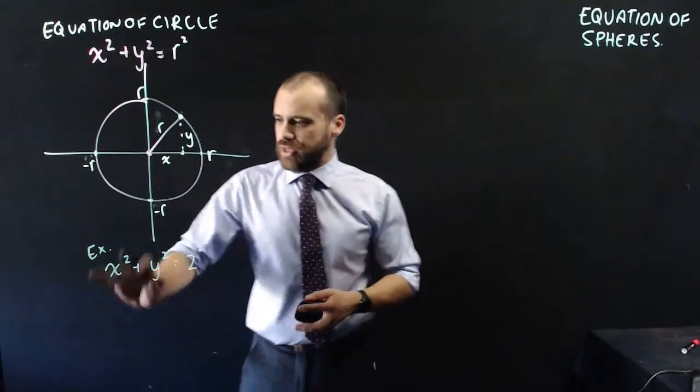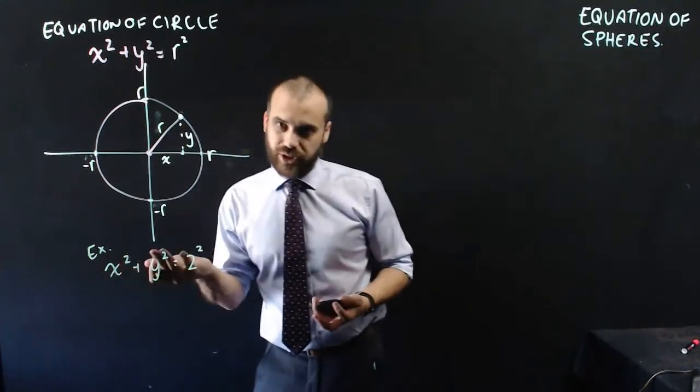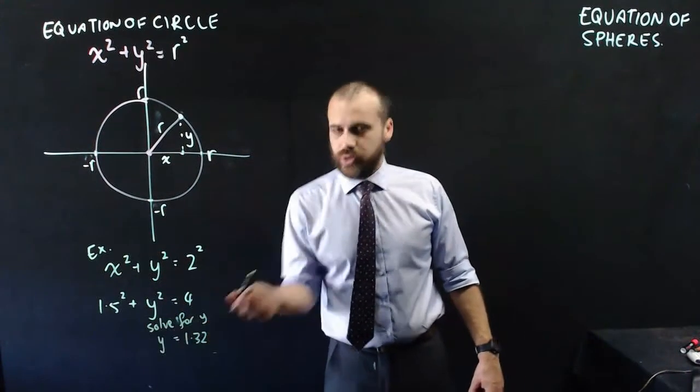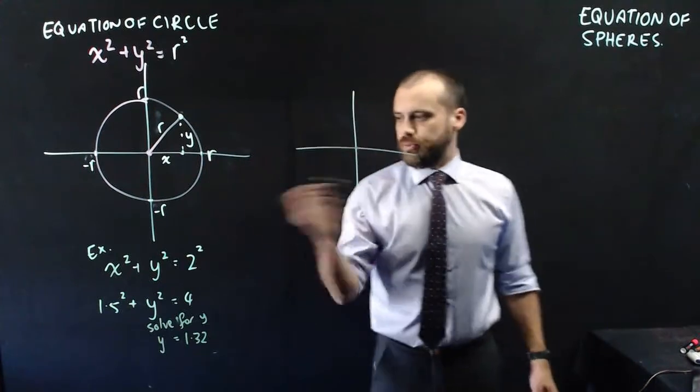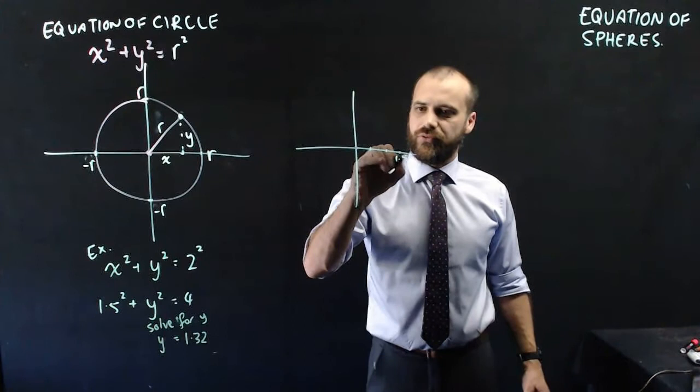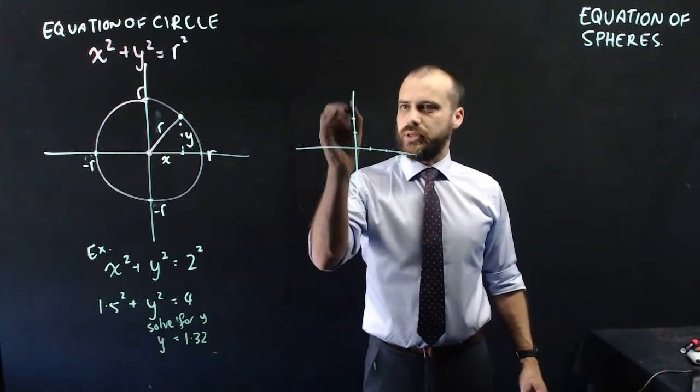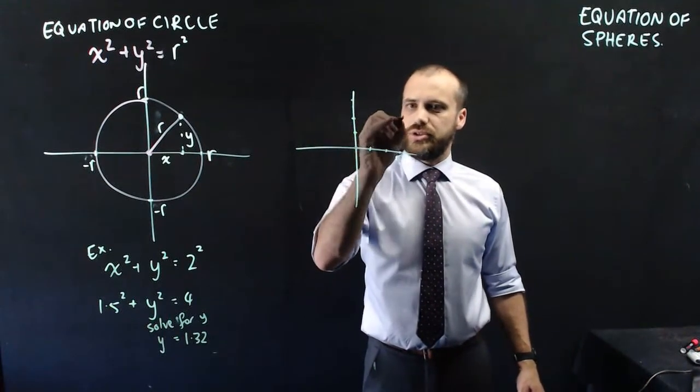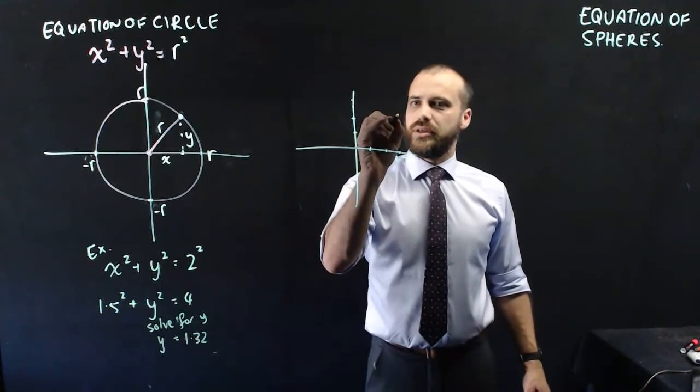We can shove in a value for x, say 1.5, and when you solve that for y, you get y equals 1.32. So you can put that on like a Cartesian plane here, 0.5, that's 1.5 there, and y is 1.32, about here.